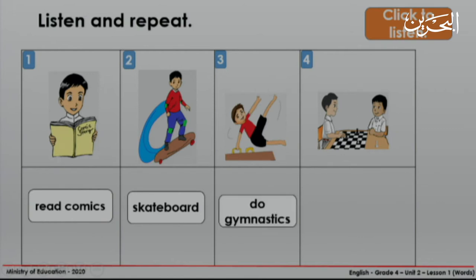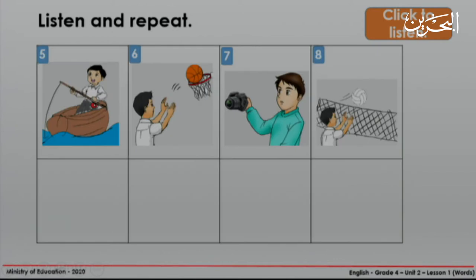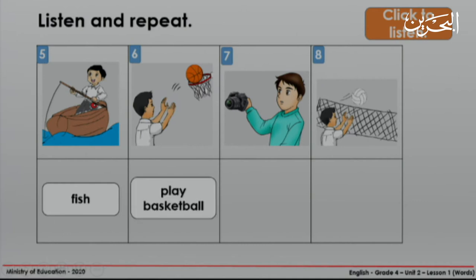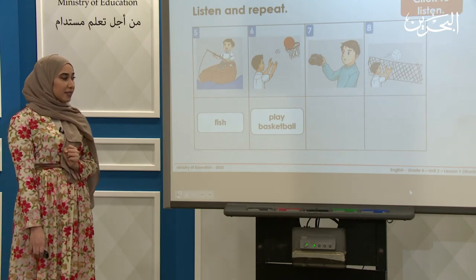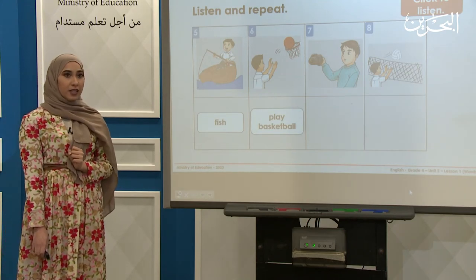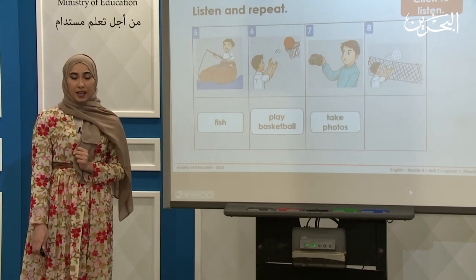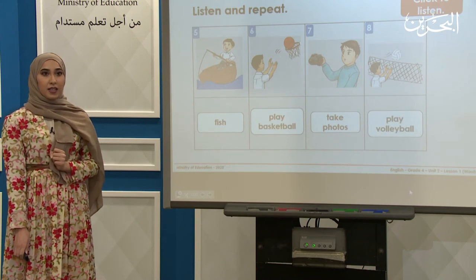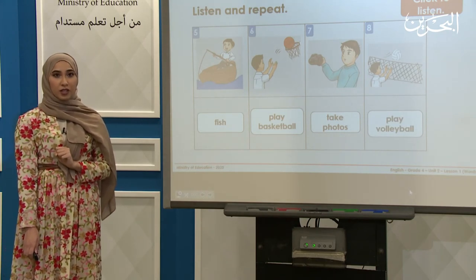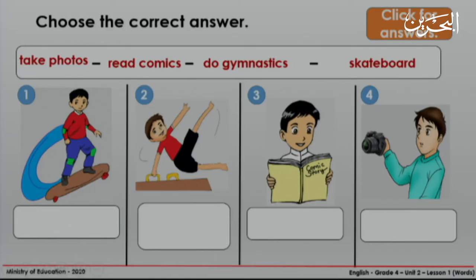Number three: do gymnastics. Number four: play chess. Number five: fish. Number six: play basketball. Number seven: take photos. Number eight: play volleyball. Now I want you to get ready with your mini board.